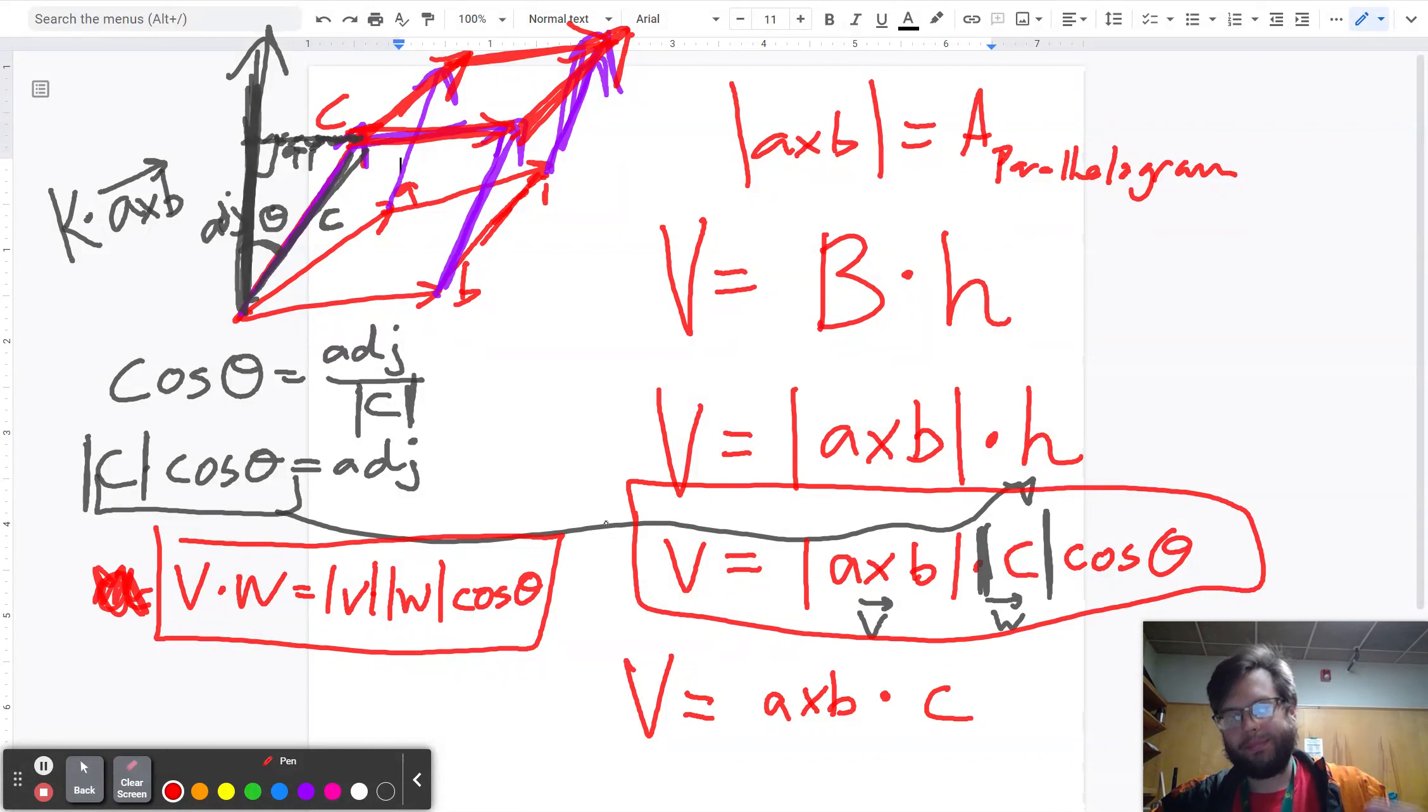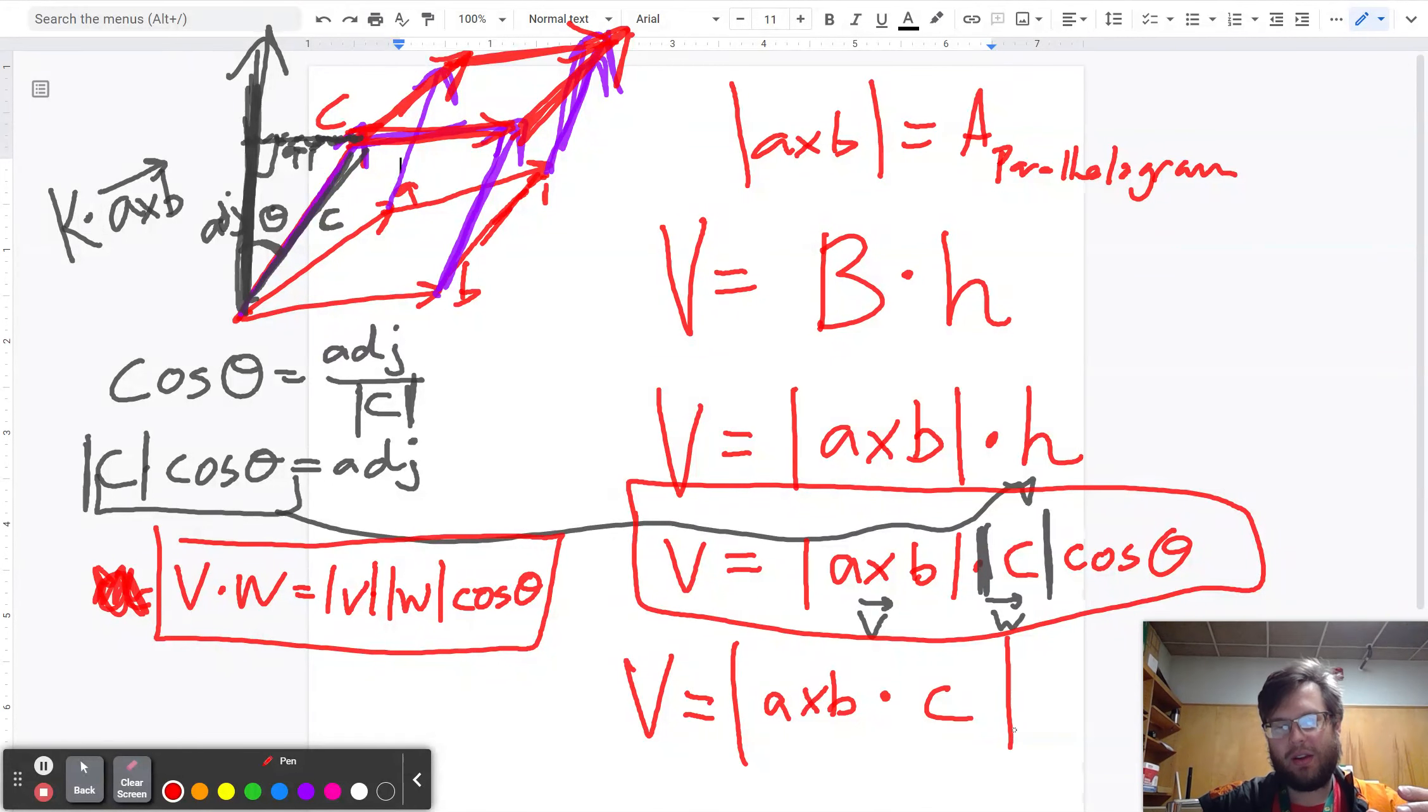There's one other little caveat. Because order matters, if I did A cross B versus B cross A, I'd get the negative answer from one to the other. But volume is a strictly positive number. We stick absolute value bars around it. And also just to make it clear, the order of operations here, you have to do the cross product first and then do the dot product.